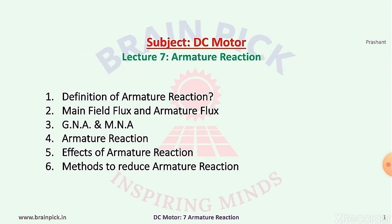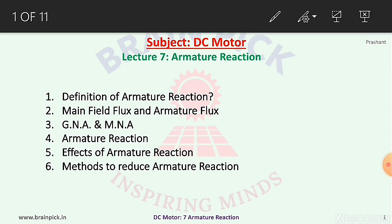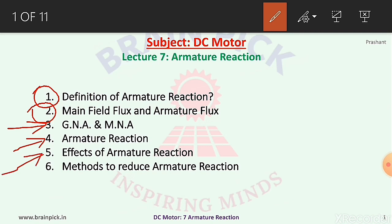In a DC motor, the magnetic neutral axis due to armature reaction shifts in the opposite direction to the rotation of the motor. In a DC generator, the MNA due to armature reaction shifts in the direction of rotation. In this lecture we covered six points: armature reaction, main field flux and armature flux, geometric neutral axis and magnetic neutral axis, the procedure of armature reaction, effects of armature reaction, and how to reduce it.